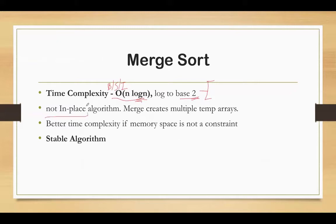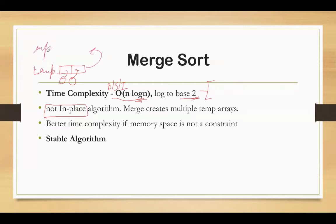Merge sort is not an in-place algorithm. The reason is that when the merge phase happens, the elements of the array get saved in a temporary array, and this temporary array is then put back into the given input array. With an increase in the number of elements in the input array, the number of temp arrays increases. So if we do not have a memory constraint for our application, then we can go ahead and use merge sort.